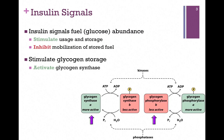What is the effect after the glucose is taken up by the cell? What are the further effects of insulin? Well, remember, insulin signals fuel abundance. If we have an abundance of glucose, then we want to stimulate using glucose and storing it, and we want to inhibit mobilization of stored glucose in the form of glycogen.